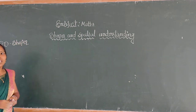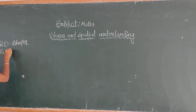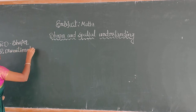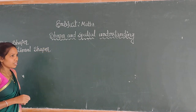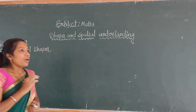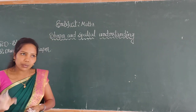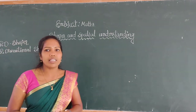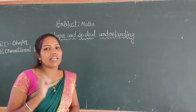What is the meaning of 2D shapes? 2D shapes means two dimensional shapes. Two dimensional shapes are plane shapes because they are flat. Which are the 2D shapes? There are 4 2D shapes: square, rectangle, triangle, and circle.